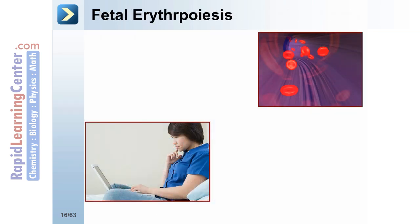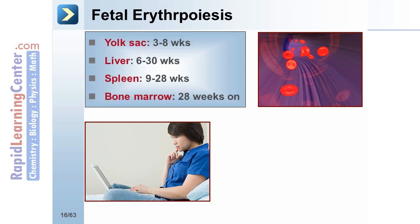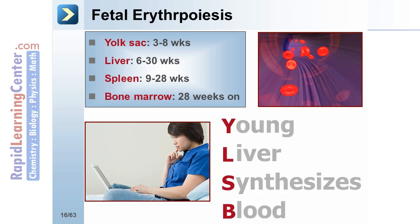Now let's turn our attention to fetal erythropoiesis, which takes place in four locations depending on the stage of development. Erythropoiesis takes place in the yolk sac at three to eight weeks, in the liver from six to 30 weeks, in the spleen from nine to 28 weeks, and in the bone marrow from 28 weeks on. You can remember this with the mnemonic Young Liver Synthesizes Blood, which stands for yolk sac, liver, spleen, and bone marrow.